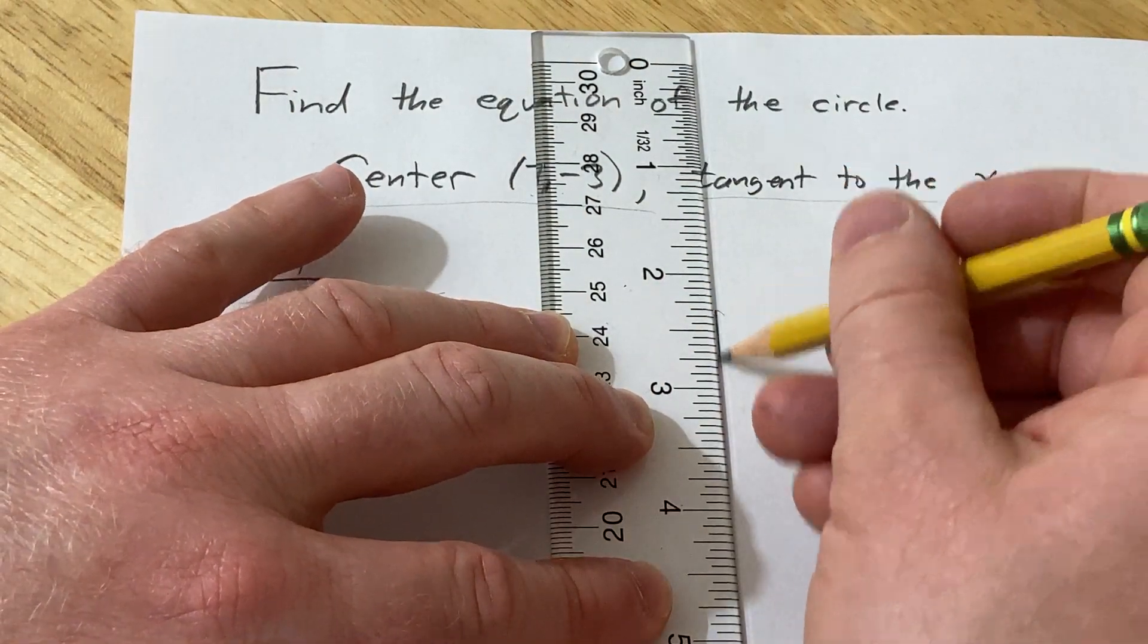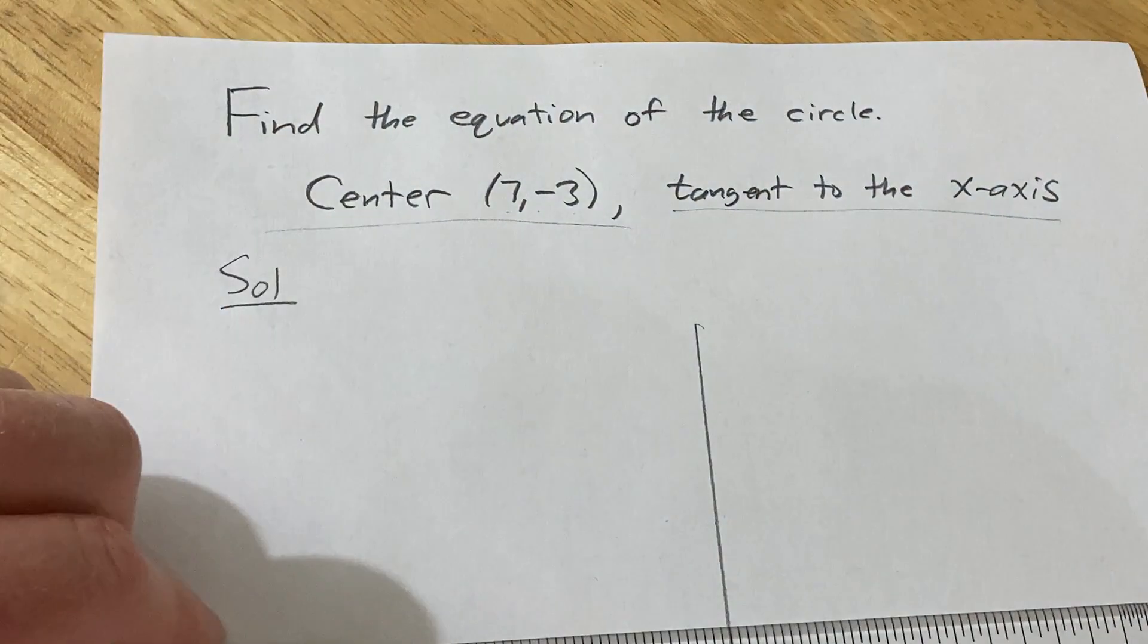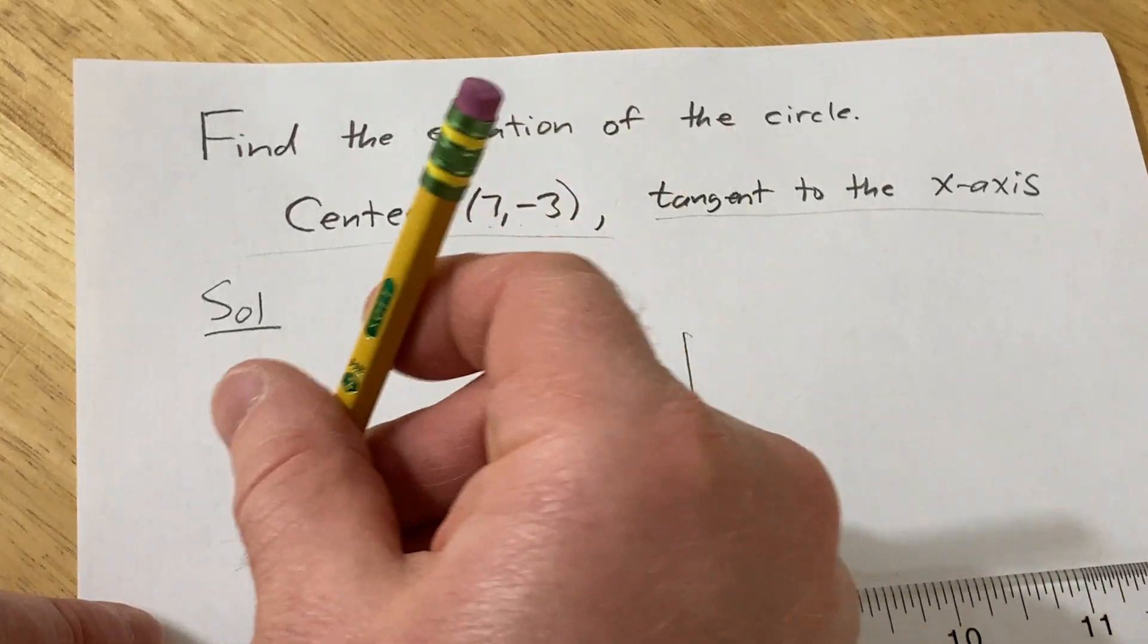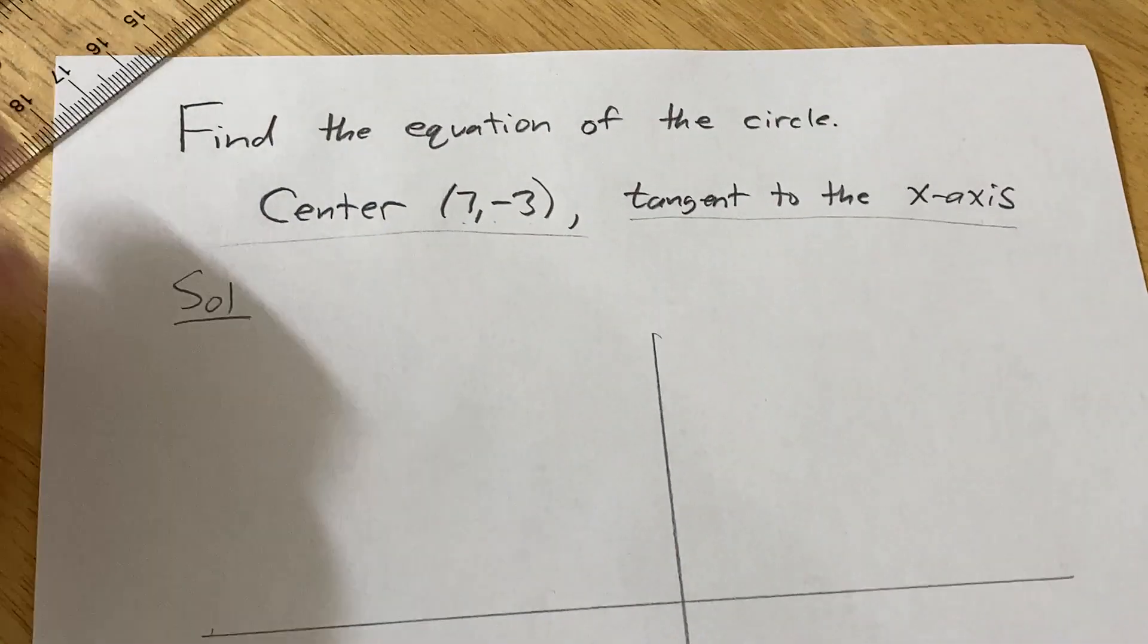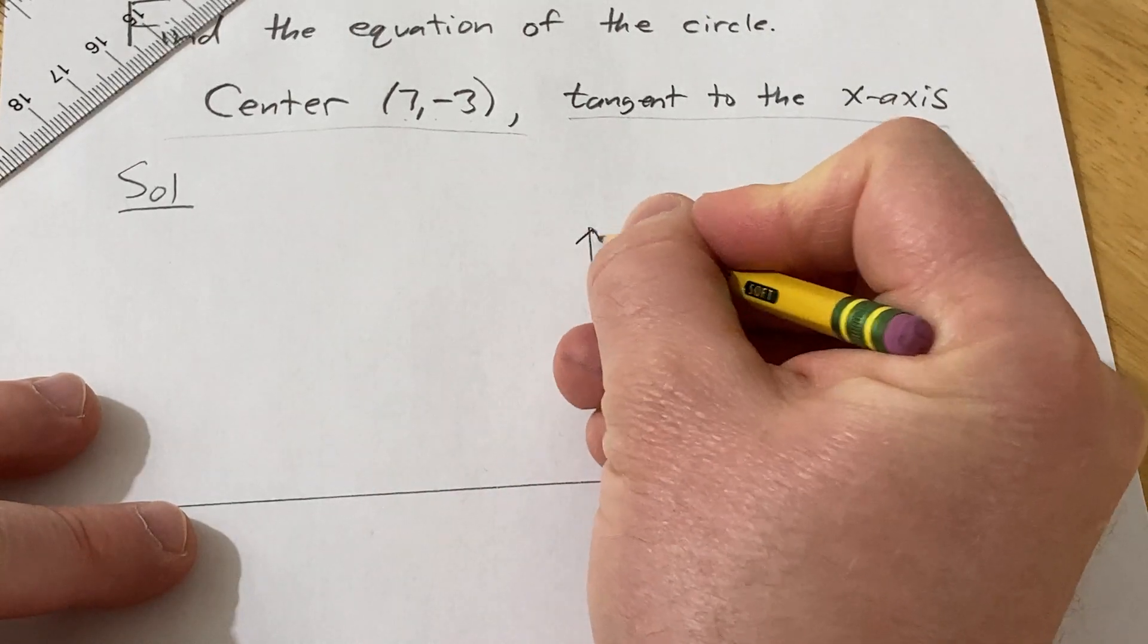So here's the y-axis and then here is going to be the x-axis. Okay, so this is x, this is y.